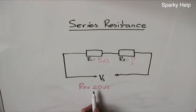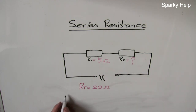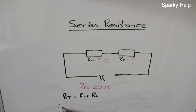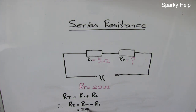Here we have a circuit where RT is 20, R1 is 5, and R2 is an unknown. Always start with the formula: RT is equal to R1 plus R2. The unknown in this case is R2, so we need to rearrange the formula. Therefore, R2 is equal to RT minus R1. Always remember to write the formula out — you've got more chance of remembering it. So, 20 minus 5 equals 15 ohms.